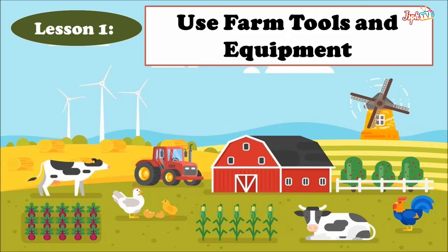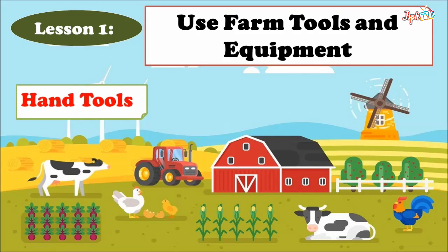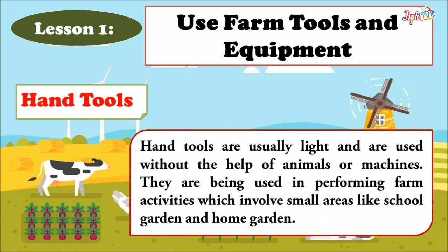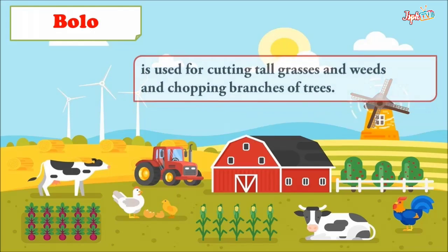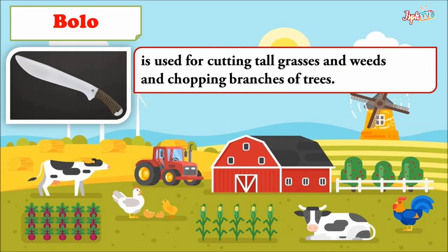Hand tools are usually light and are used without the help of animals or machines. They are used in performing farm activities which involve small areas like school gardens and home gardens. Under hand tools, we have the bolo, which is used for cutting tall grasses and weeds and chopping.